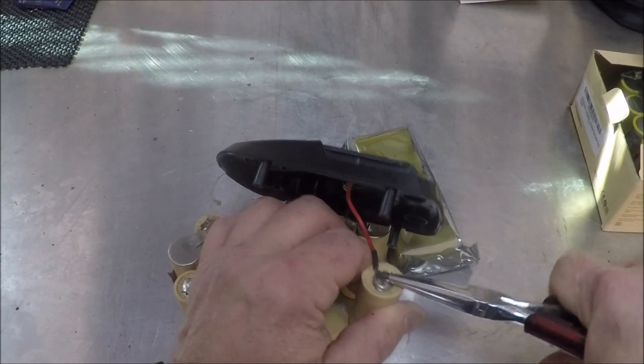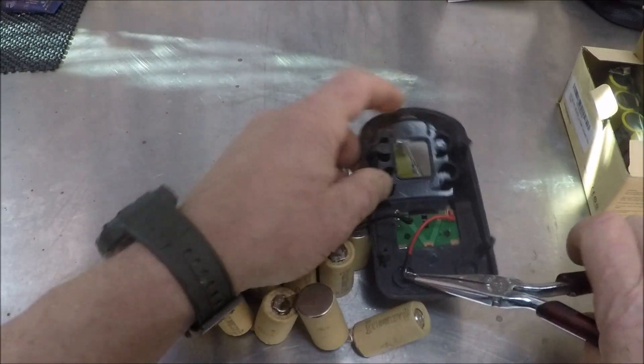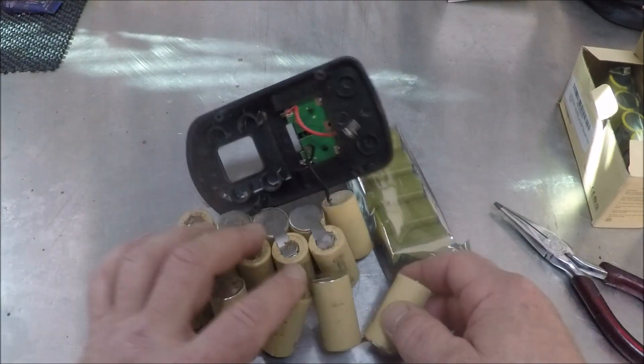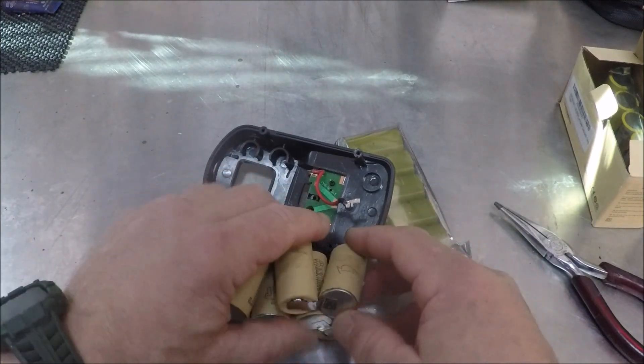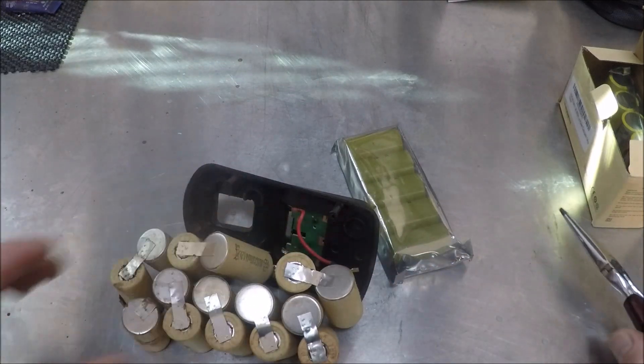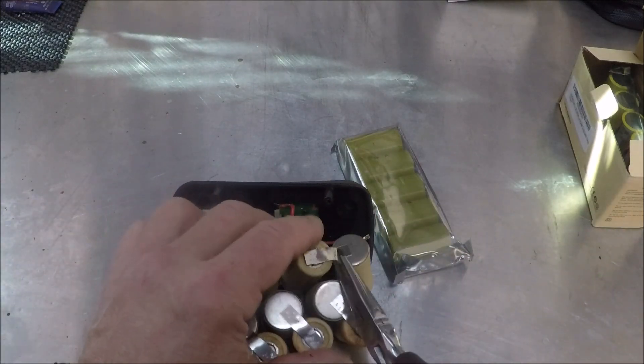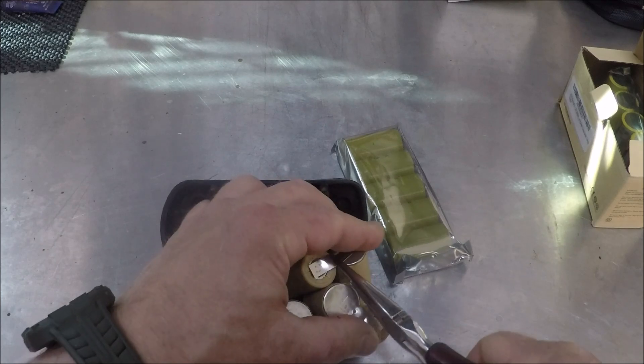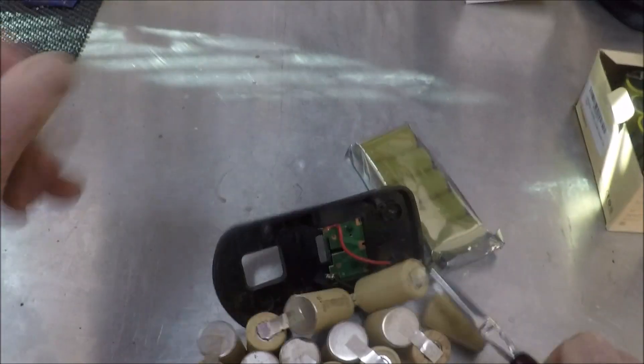Now I'll use needle nose pliers to remove the strip that electrically connects all the batteries. Unfortunately, you'll see I made two mistakes while I'm doing this. First, I should have used a mat to prevent the batteries from contacting the bench and shorting out. And second, I should have been wearing gloves.